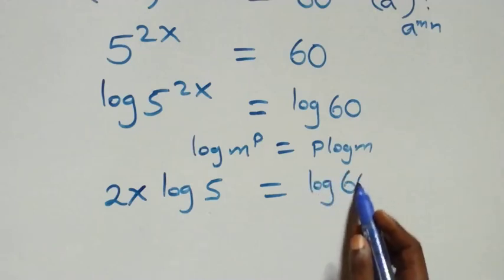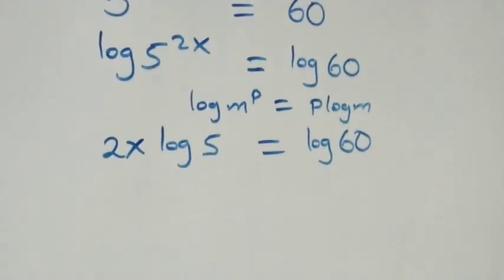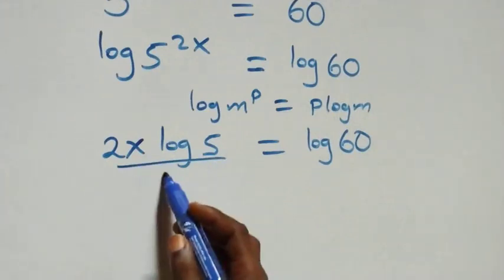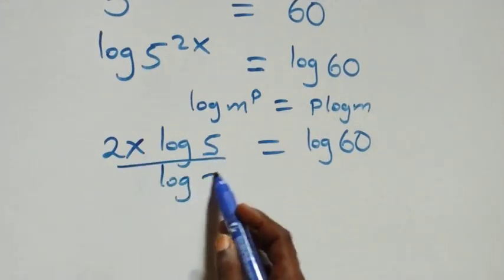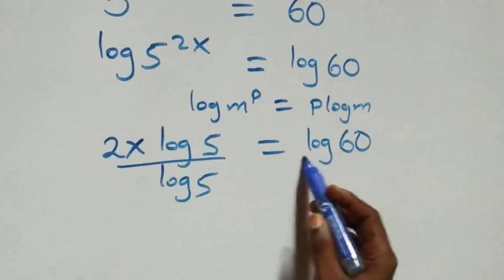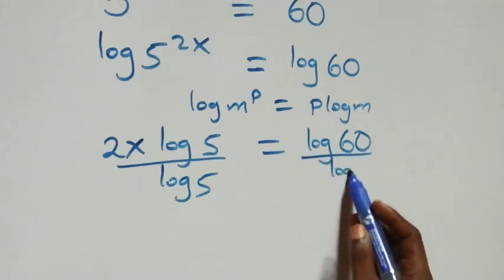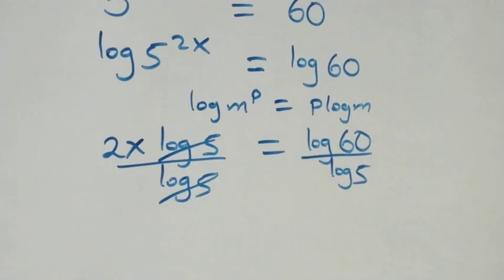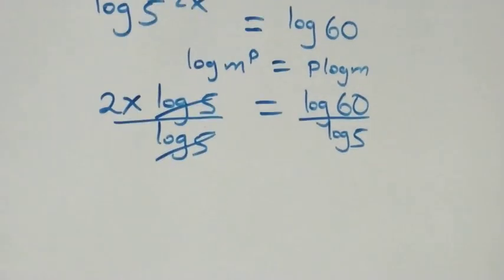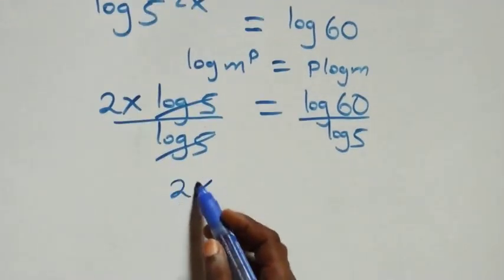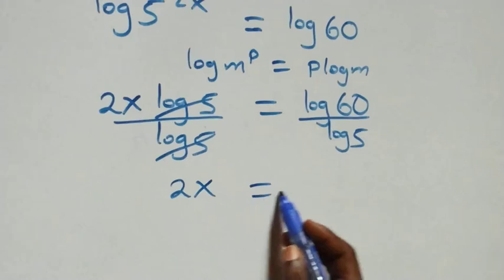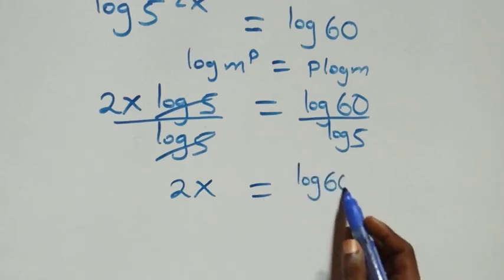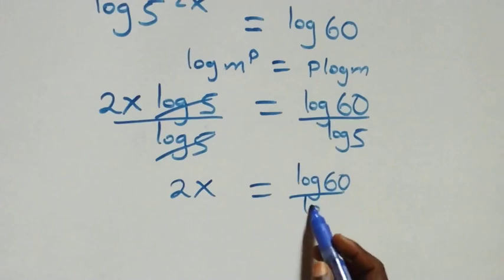Then the next step: we divide both sides by log 5. The log 5 terms cancel each other, and we have 2x left, which equals log 60 over log 5.